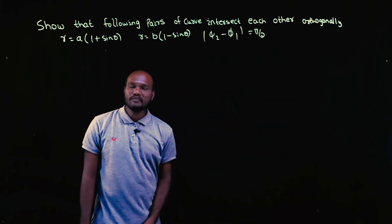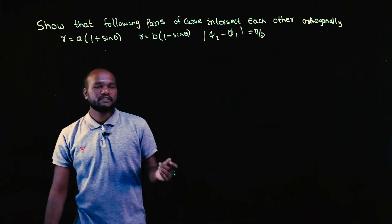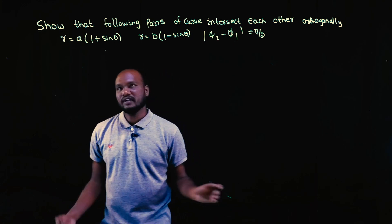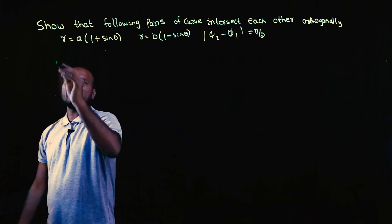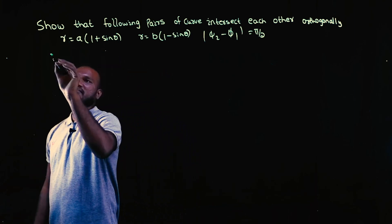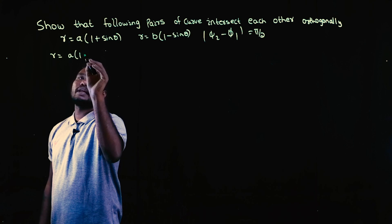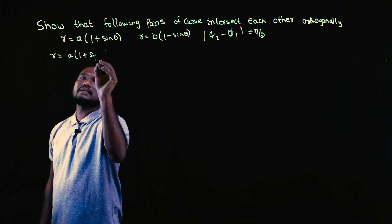So if we want to find φ₂ minus φ₁, we have to find φ₁ first, then we have to find φ₂. To find φ₁, let's take the first curve: R is equal to A into (1 + sinθ).